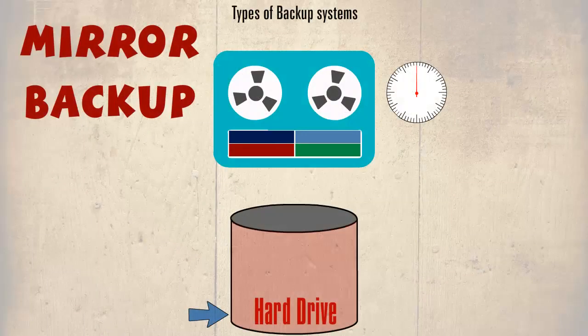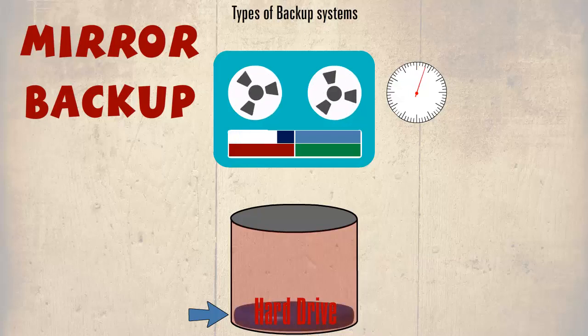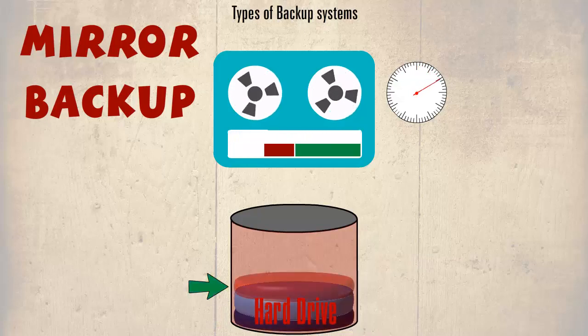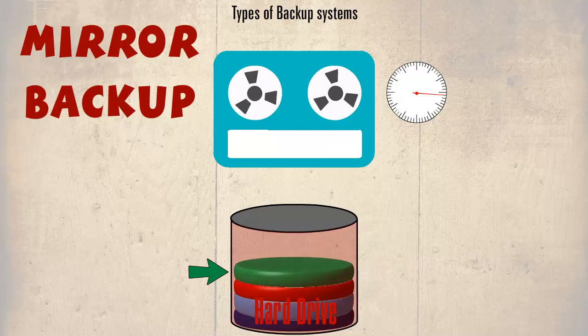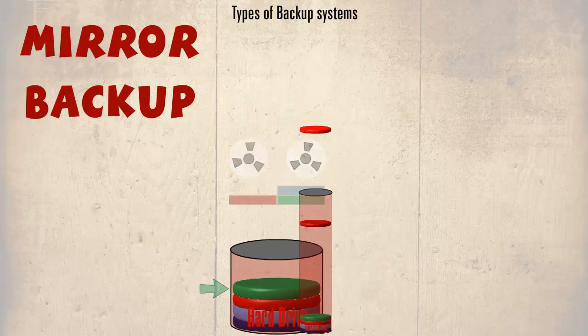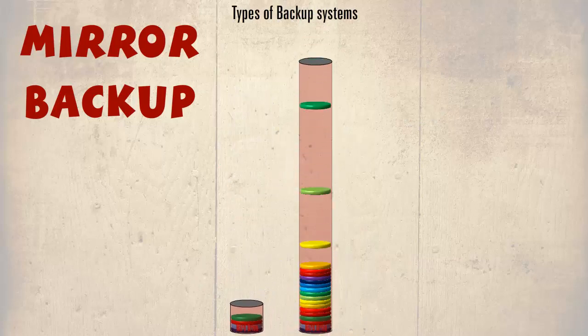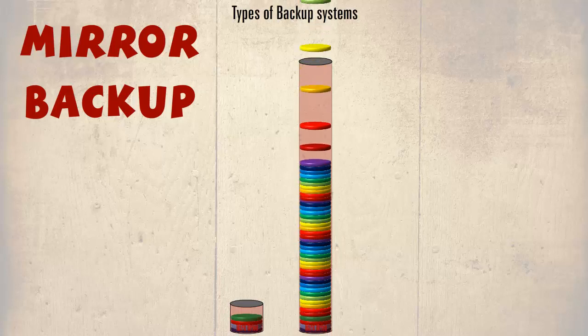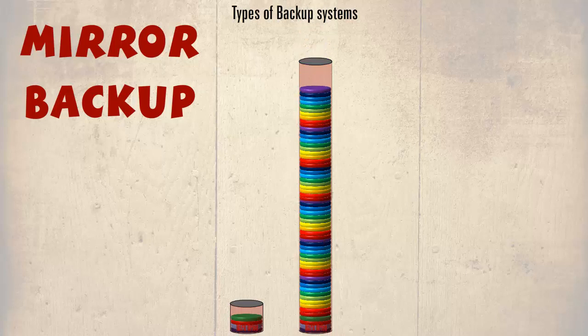Mirror or image backup, as we have seen, is very versatile in that we can restore an individual file or a complete restoration from one single backup. But the scale we have been using can be miniscule in comparison to what we may find in reality. It could be hundreds or thousands of megabytes of data, which could mean lost productivity time, and as we have seen, anything saved after the mirror backup will be lost.